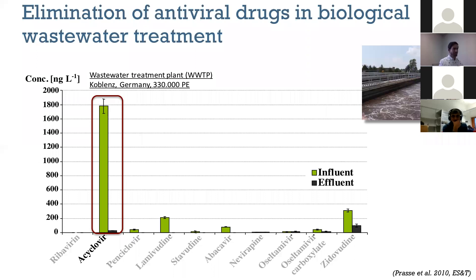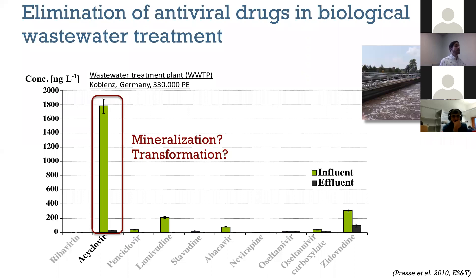Focusing now on acyclovir — we saw very high influent concentrations of almost 2 micrograms per liter, and in the effluent it's mostly gone — more than 95% of this compound is removed. The question for me was: what is actually happening to this compound? Since it's a very polar compound, sorption to sludge doesn't play a role, so it must be degraded. The question was, is it mineralized — which would be the ideal outcome — or is it simply transformed to a different compound?